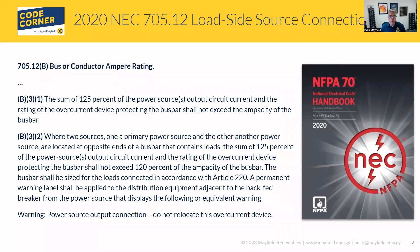So let's first look at the language in B31 and B32. B31 is one that's probably not actually used all that often — it's kind of a hard one to have a system that meets this requirement, but there's an allowance for it, so we'll go through it. B32, this is the one that is lovingly referred to in the industry as the 120% rule. It's very, very typical way that systems are interconnected, especially on residential systems.